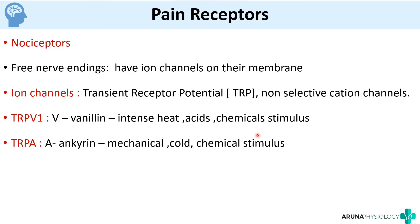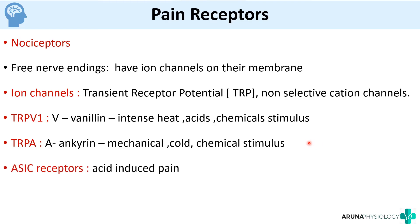Then we have TRPA, where A stands for ankyrin, which causes pain due to mechanical, cold, or chemical stimuli. We also have ASIC, which detects acid-induced pain. Like this, there are many receptors involved in pain detection. These nociceptors are present on free nerve endings and are non-selective cation channels.